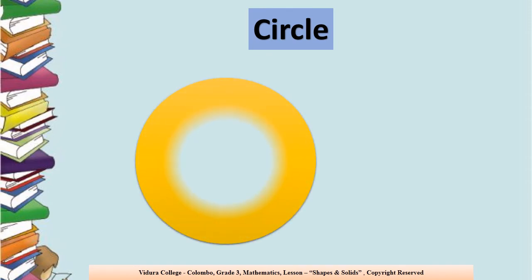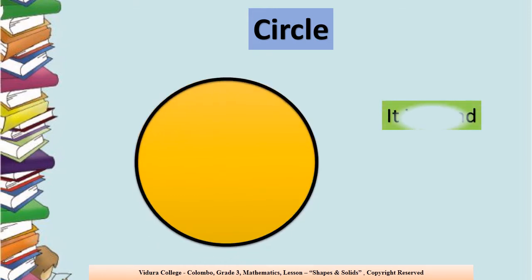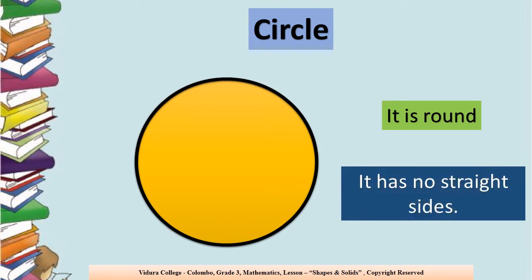What is the next shape? It's a circle. What is the shape of the circle? We can say it is round in shape. Can you see any sides in the circle? No, we can't see any sides in the circle. So we can say it has no straight sides. About the circle: it is round and it has no straight sides.